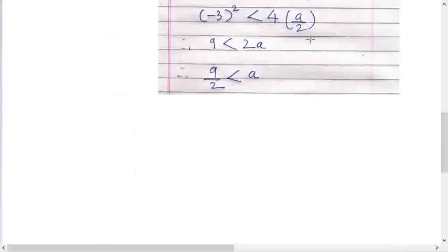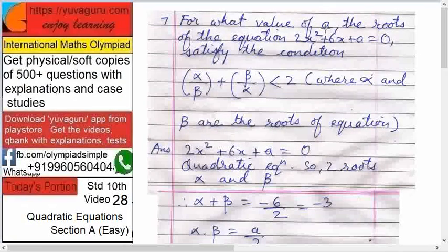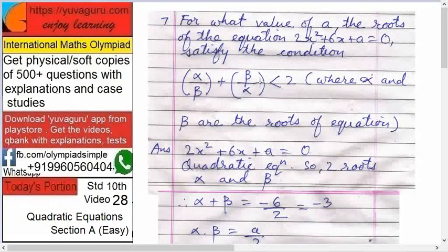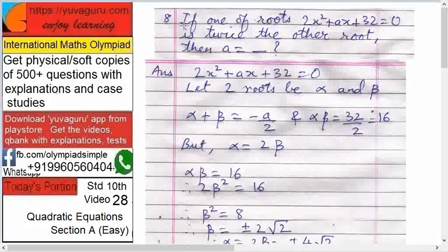For this value of a, the roots satisfy this condition. Okay, next. If one of the roots of 2x² + ax + 32 = 0 is twice the other root.